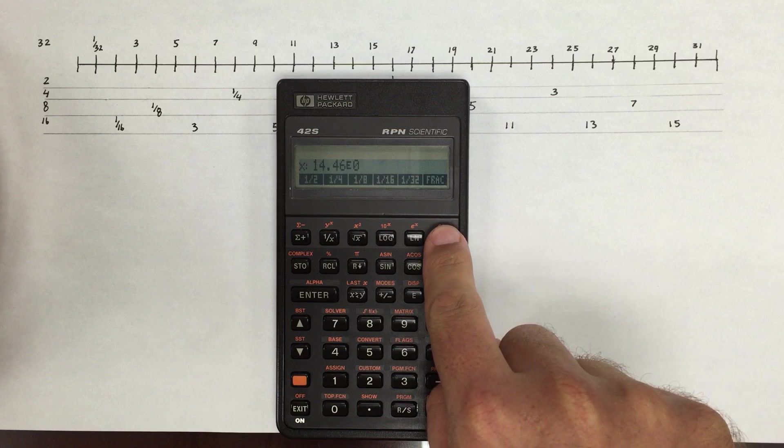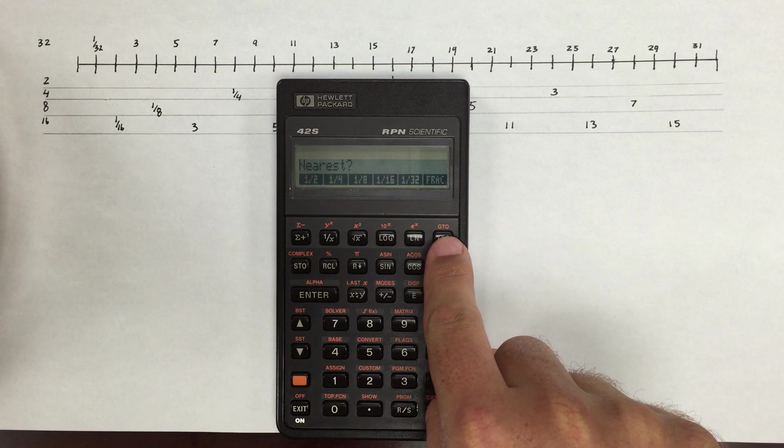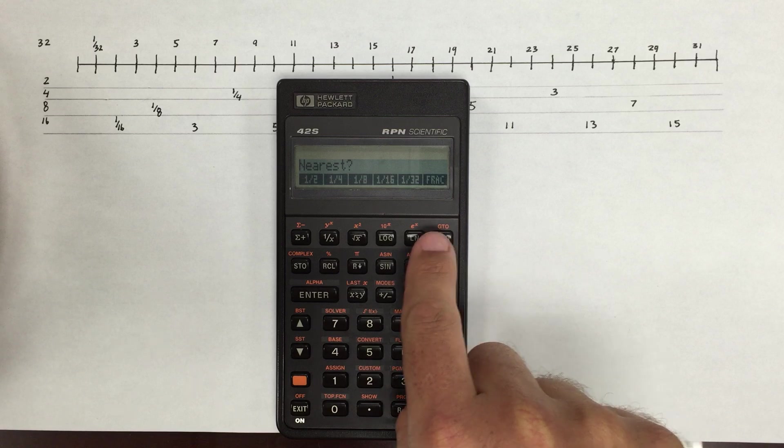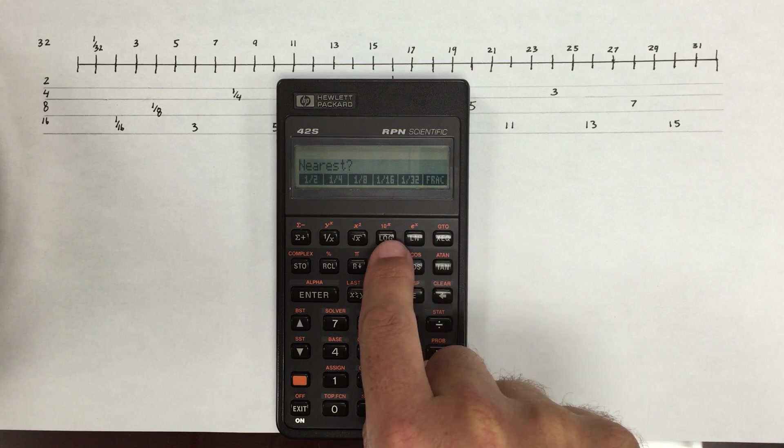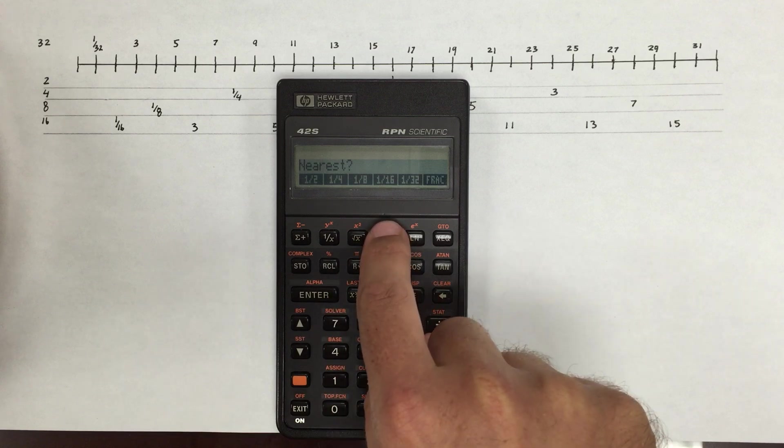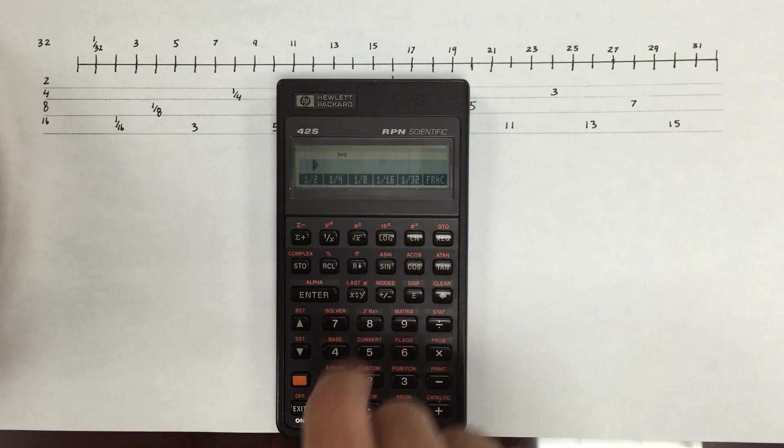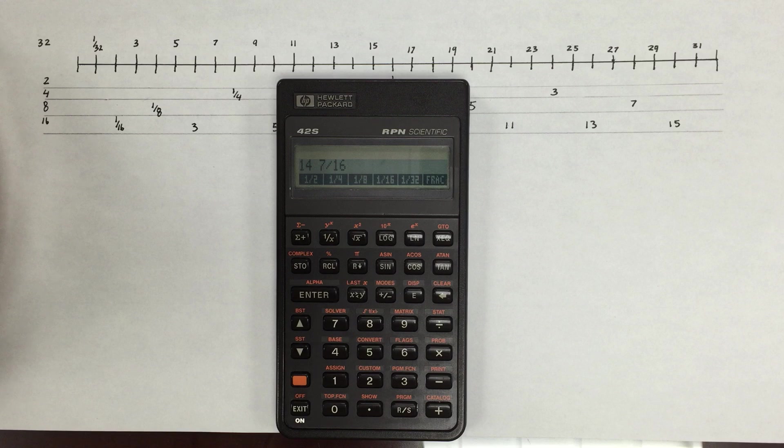So I hit the fraction button here, and that asks me what the nearest value I want. So do I want the nearest 32nd, the nearest sixteenth, the nearest eighth? And I want the nearest sixteenth. I'll go ahead and hit that, and it comes back with 14 and 7 sixteenths as the nearest sixteenth.